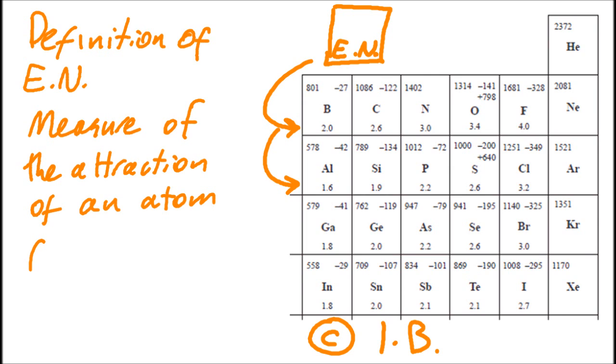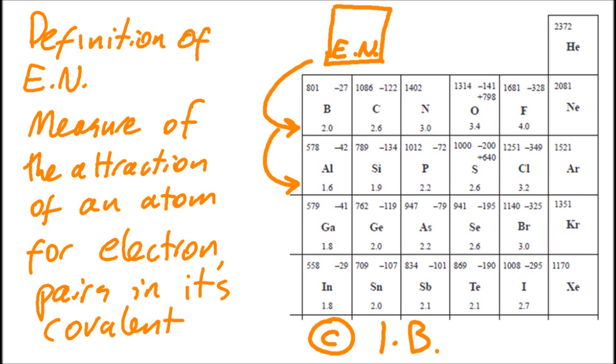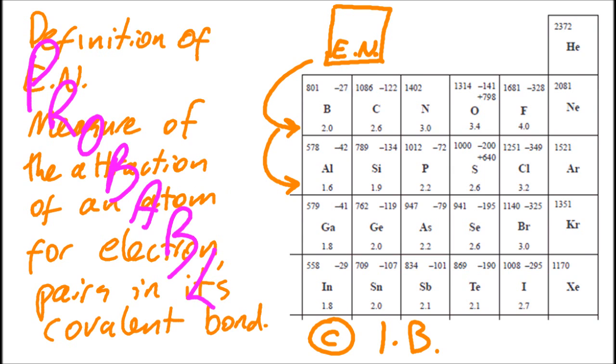So it's the measure of the attraction of an atom for electron pairs in its covalent bond. Electron pairs seems to come up a lot, but there's been other definitions that they've accepted too.